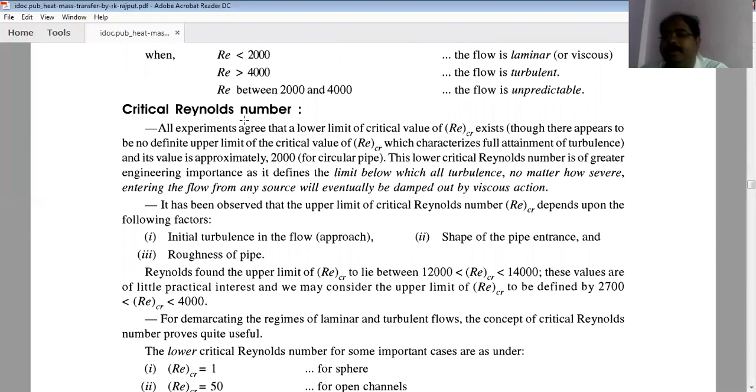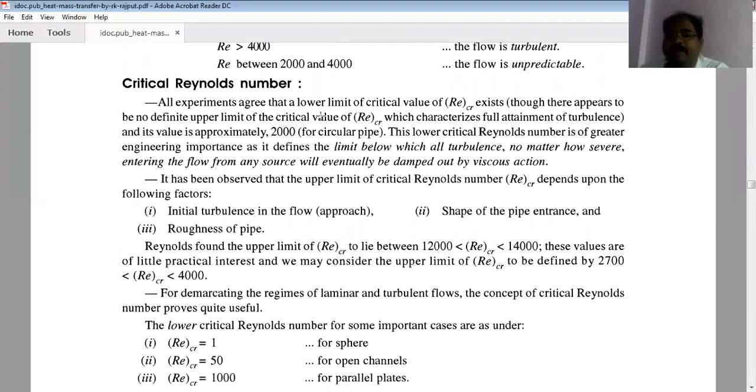Now discussing critical Reynolds number. All experiments agreed that a lower limit of critical value exists, though there appears to be no defined upper limit which categorizes full attainment of turbulence. Its value is approximately 2000 for circular pipes. This lower critical Reynolds number is of greater engineering importance as it defines the limit below which all disturbances entering the flow from any source will be damped by viscous action.